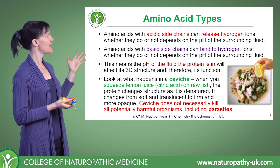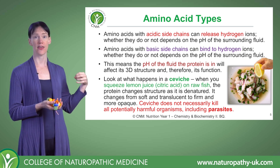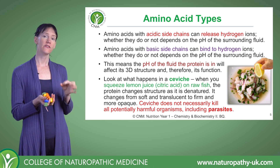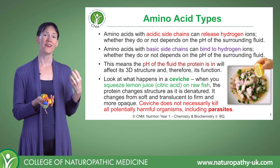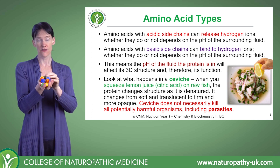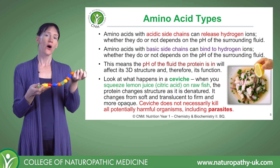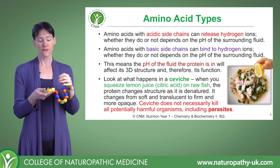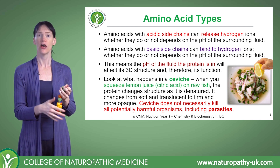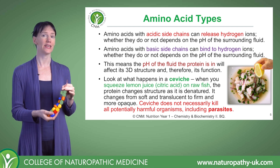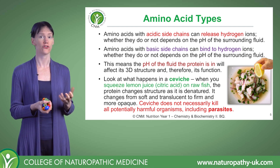We can see denaturation in action in ceviche. You take raw fish and squeeze over something citric like lemon juice, and you can see the structure of the fish changing — it goes from soft and translucent to firm and opaque. That is the proteins within the fish going from one 3D structure to an unravelled structure. Ceviche looks like it's cooked the fish, but the temperature hasn't changed, so this method doesn't actually kill any parasites — it just denatures the proteins and changes the structure of the fish.